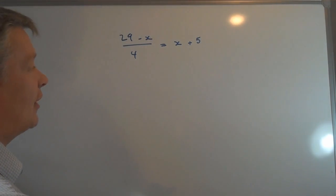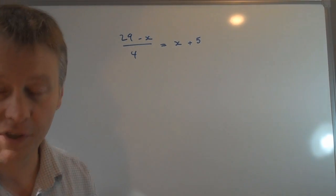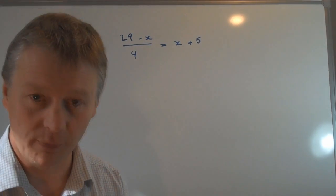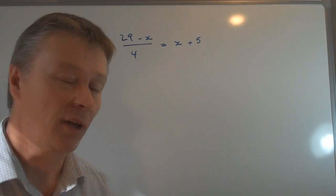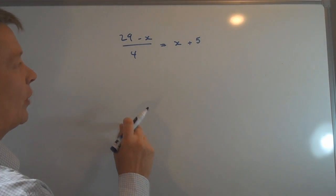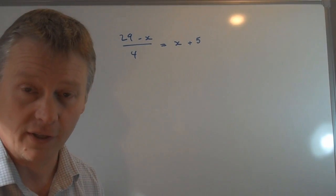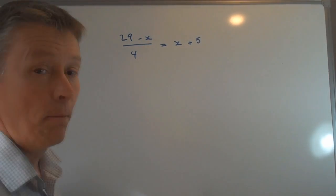So the way I'm going to do that firstly is I'm going to get rid of this over 4, this divide by 4. And the way I do that is I'm going to multiply by 4 and that will cancel it out. But like all good algebra, you need to make sure that whatever you do to the left-hand side, you have to do to the right-hand side.